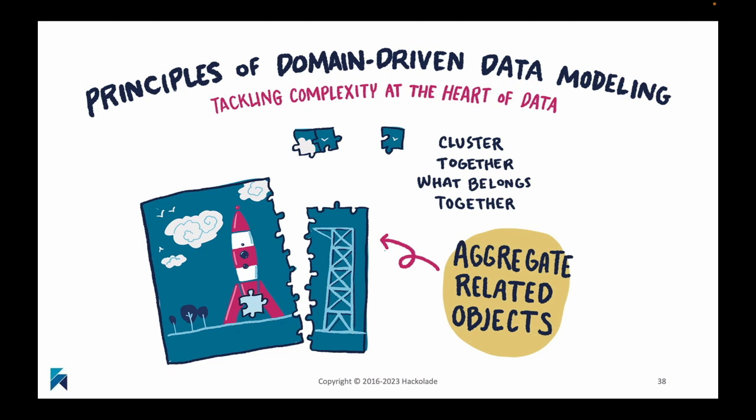The next principle is that it becomes much easier to work with data models as you are able to aggregate related objects together. This is a lesson learned in other fields, specifically the data engineering field where things like NoSQL databases have sprung up — new types of databases that really promote this as well. Work with aggregates, work with related objects that are construed of a number of different other objects so that they represent the business entity you are working with. Cluster these things together if they belong together.